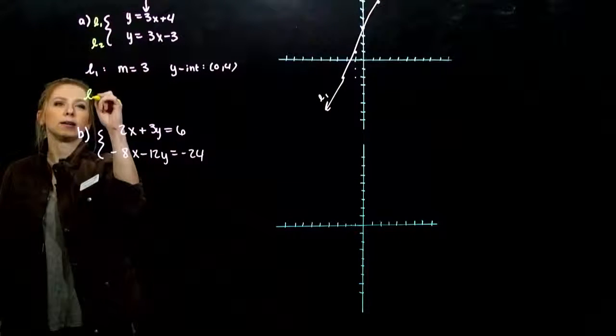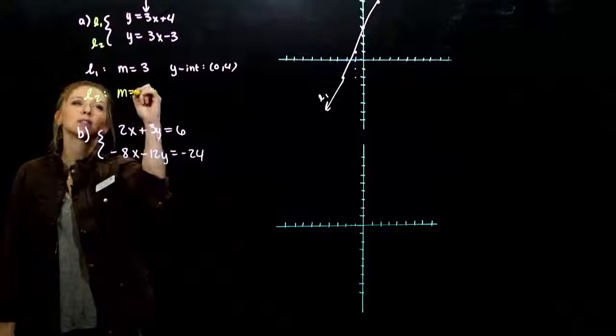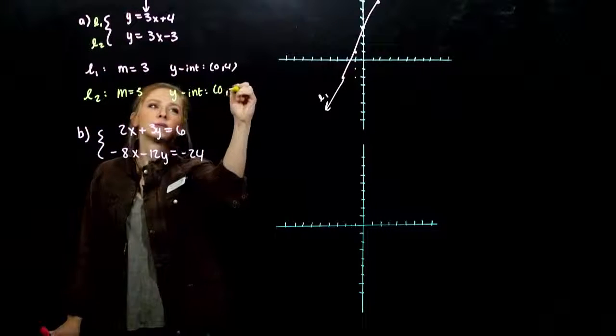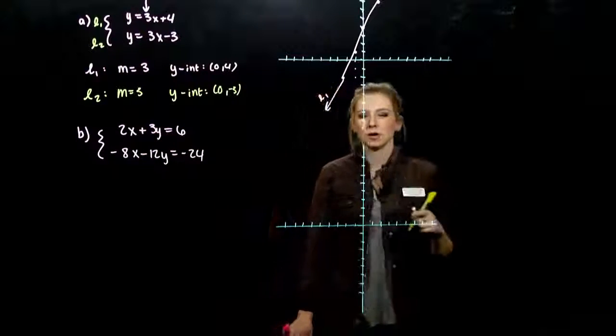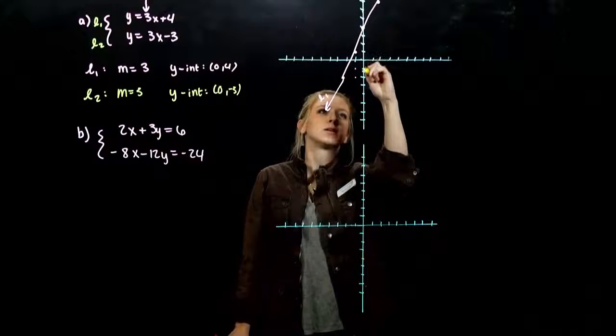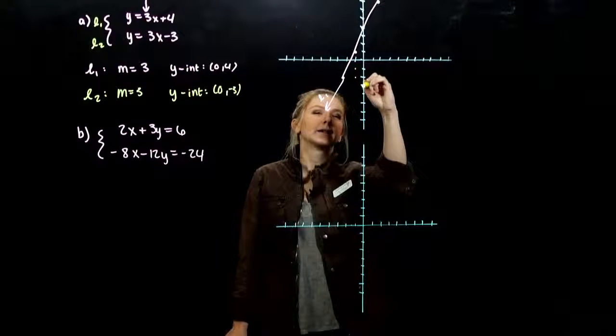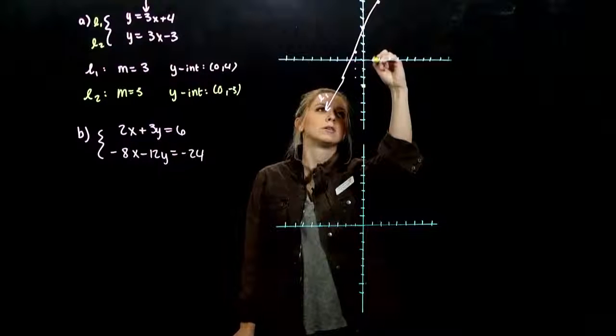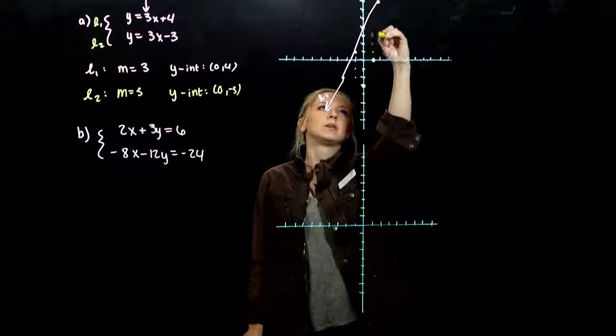And the second line, what do you notice about that one? It has the same slope, different y-intercept. So what's it going to be looking like in regards to this line? Going through a different point on the y-axis, but we still have the same slope. Up 3, over 1. Up 3, over 1.